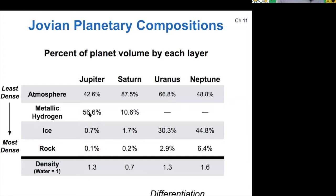Each layer is definitely a very different density, with the upper levels of the atmosphere being very thin and the rocky cores being quite dense. But on average, they work out to being a little bit more dense than water for all of these except Saturn. So the same process of differentiation basically plays out for all of the planets.